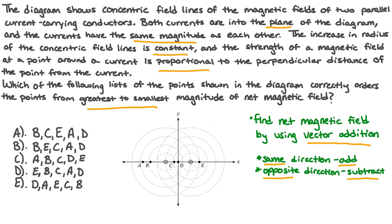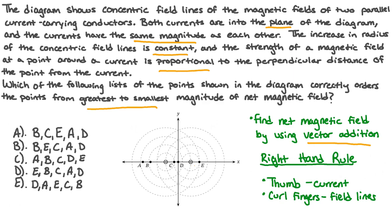Let's apply this to our diagram by using the right-hand rule. We need to remember that our thumb will point in the direction of the current and our fingers will curl around the wire to show the direction of the field lines. When we do the right-hand rule on our diagram, our thumb points into the screen and our fingers curl around, showing that our magnetic fields will be pointing clockwise around both wires. We can use yellow to show the direction of the field around the right wire and pink to show the direction of the field around the left wire.